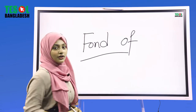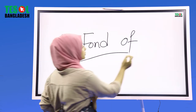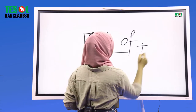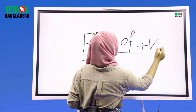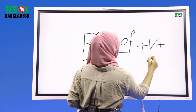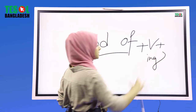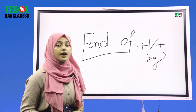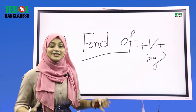So, 'fond of' dheer jakhon aamra kona sentence make korebo, abo shi ekti structure maath hai raakbo: 'fond of' plus verb plus ing. Ehi structure follow kore aamra sentence make korebo.